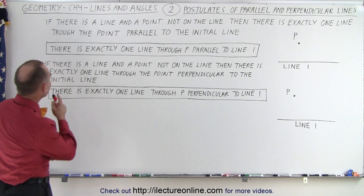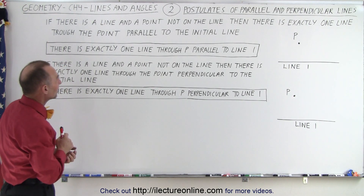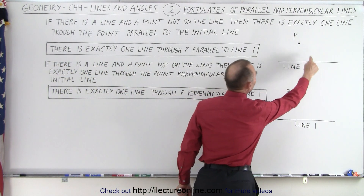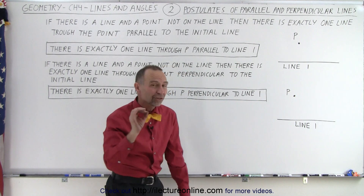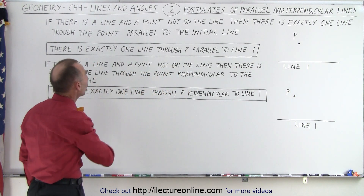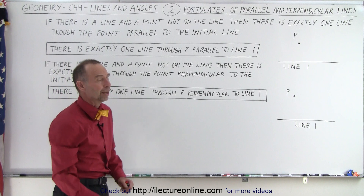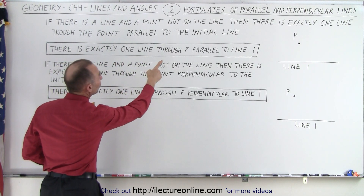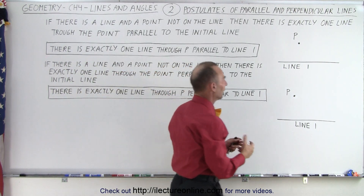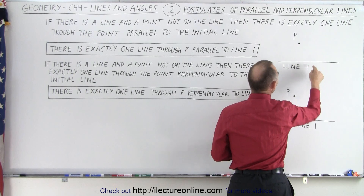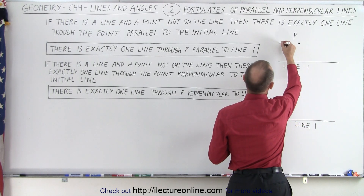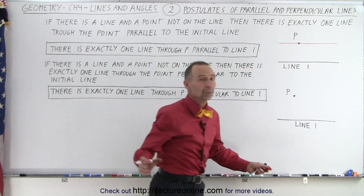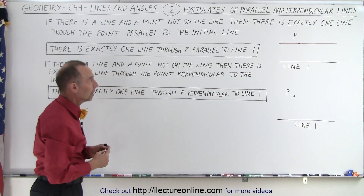If there is a line and a point not on the line — here we have an example — then there's exactly one line through the point parallel to the initial line. In short, there is exactly one line through point P parallel to line one. Here we have line one, we have a point not on the line, and therefore there's only one line that can be drawn which goes through point P and which is parallel to line one. That's postulate one for parallel lines.